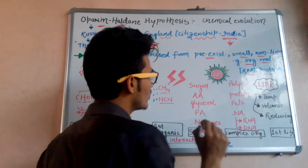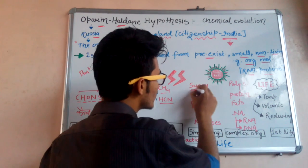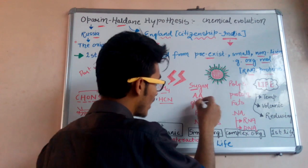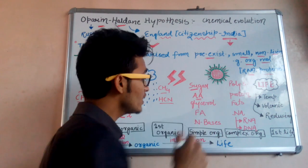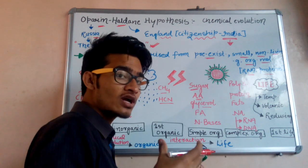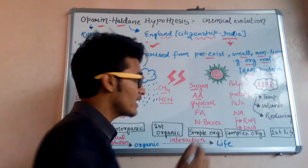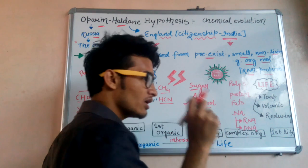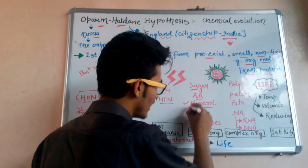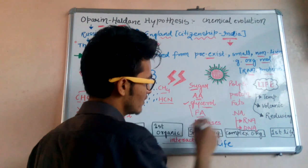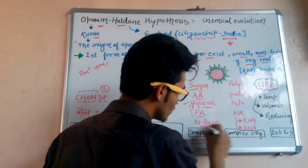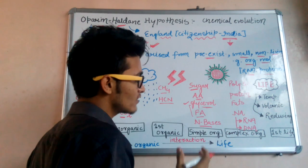These inorganic molecules then interacted further to form simple organic molecules, which are monomers. For example: sugars (monosaccharides), amino acids (monomers of protein), fatty acids and glycerol (which combine to form fat), and nitrogenous bases (which combine to form nucleic acids).